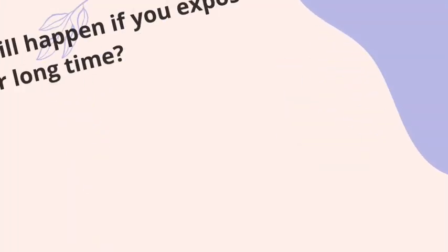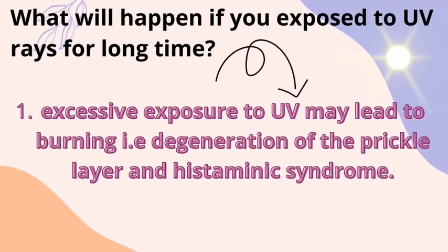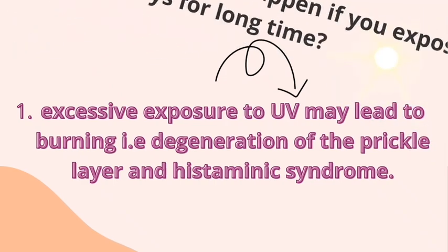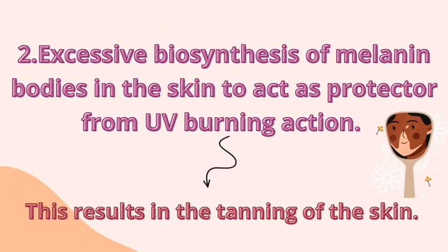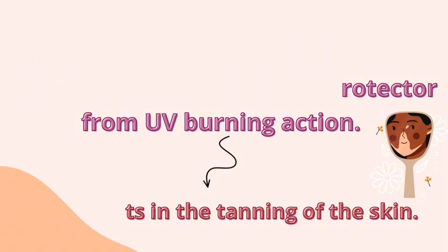Now let's see what will happen if you are exposed to UV rays for a long time. First, excessive exposure to UV rays may lead to burning, degeneration of the prickle layer, and histaminic syndrome. Second, excessive biosynthesis of melanin bodies in the skin to act as a protector from UV radiations.